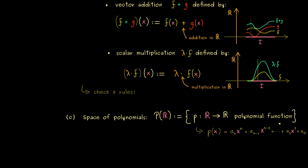We write p(x) as a_n x to the power n, then a_{n-1} x to the n minus 1, and so on down to the power 1 and 0. The only things allowed are the addition sign and scaling with coefficients. Since this is a function again, we can use the same operations as before. The crucial point is that with these two definitions — addition and scalar multiplication — we get a polynomial function again.